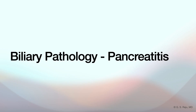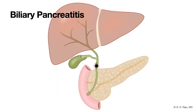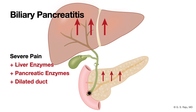Biliary pancreatitis occurs when a gallstone gets stuck right at the ampulla of Vater, blocking both exits — both the bile duct and the pancreatic duct. Double trouble. You get severe pain, elevated liver enzymes because the bile duct is blocked, and elevated pancreatic enzymes — amylase and lipase — because the pancreas is blocked and potentially getting inflamed. You might also still see that dilated bile duct. It's a really serious condition that needs urgent attention.